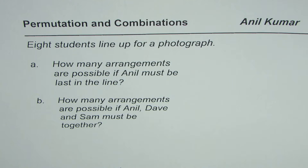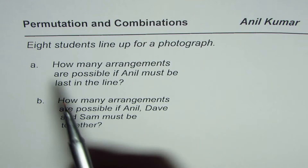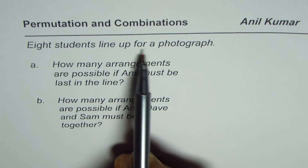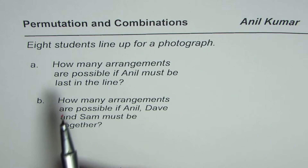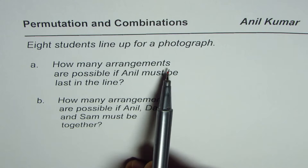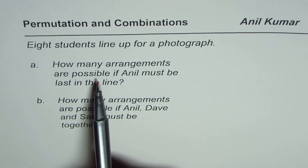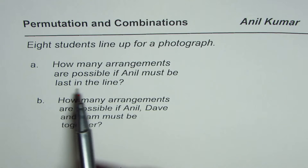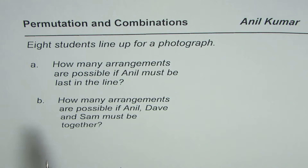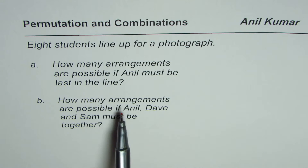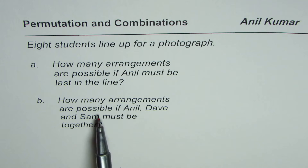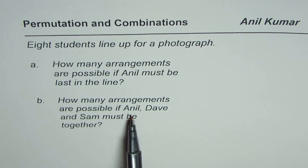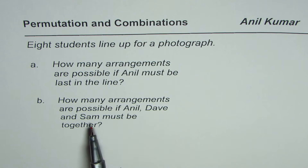Kumar is sharing a question from the test paper. The question is: eight students line up for a photograph. How many arrangements are possible if Anil must be last in the line? And part B: how many arrangements are possible if Anil, Dave and Sam must be together?